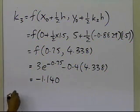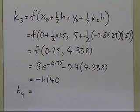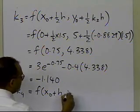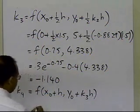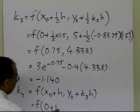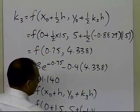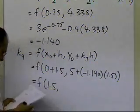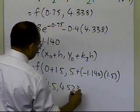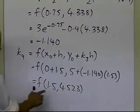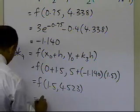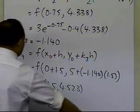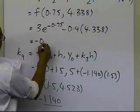k4 is the last slope, evaluated at the endpoint x0 plus h equals 1.5, with y computed as y0 plus k3 times h equals 5 plus (minus 1.140) times 1.5, giving 4.523. So k4 equals f(1.5, 4.523), which equals minus 0.3180. Note: there was a correction here — k3 was confirmed as minus 0.3180, not the earlier stated value.